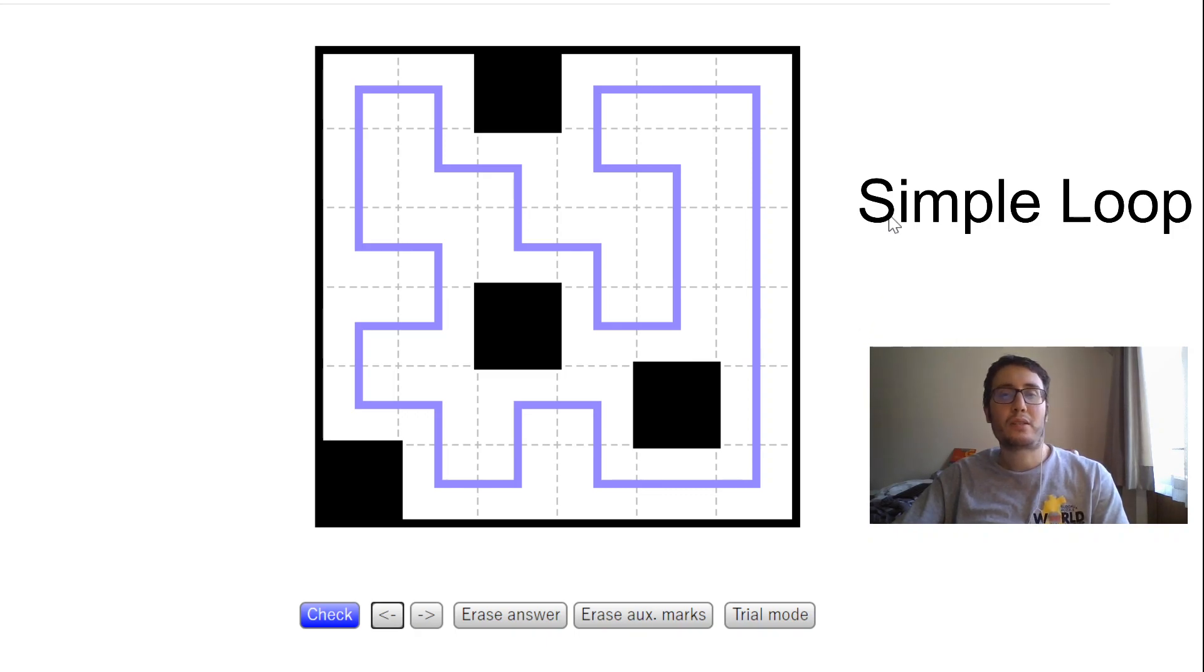I'll be going over this example to explain the rules and then try to solve some more puzzles as fast as I can. In Simple Loop, the objective is to draw a single closed unbroken loop through all non-blackened cells. Being closed means if you take an arbitrary starting point, such as the upper left, you should be able to trace the loop all through the diagram and then end up where you started.